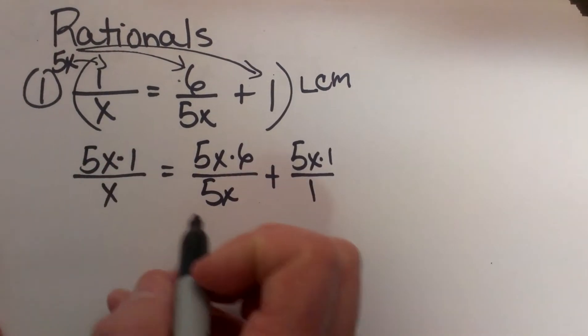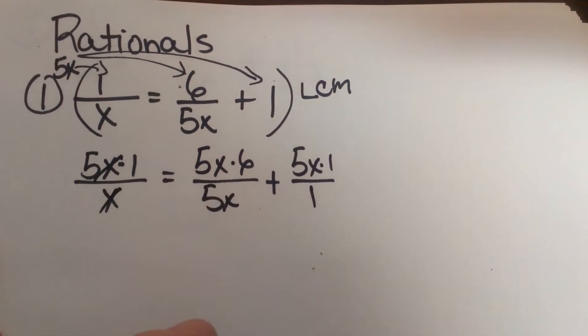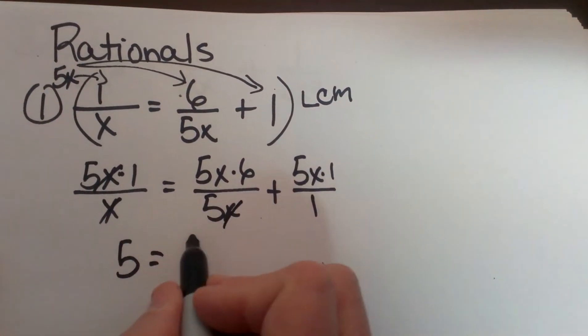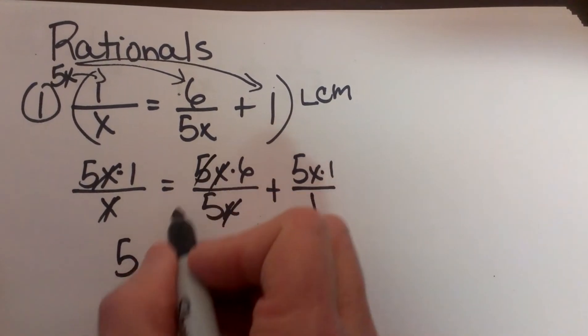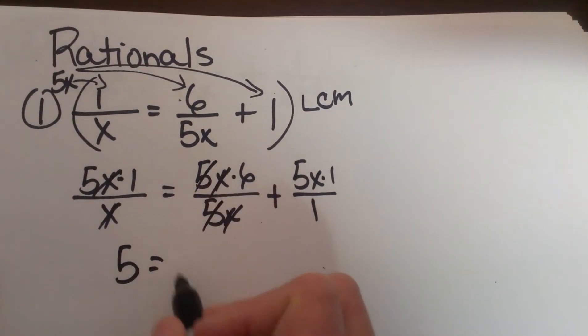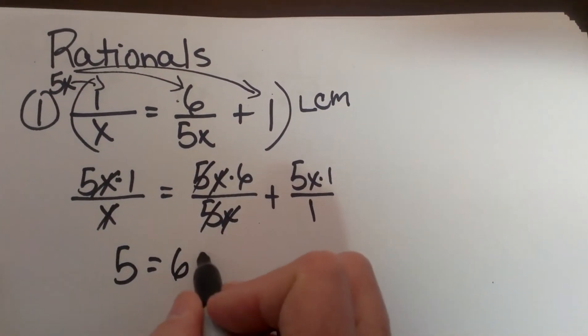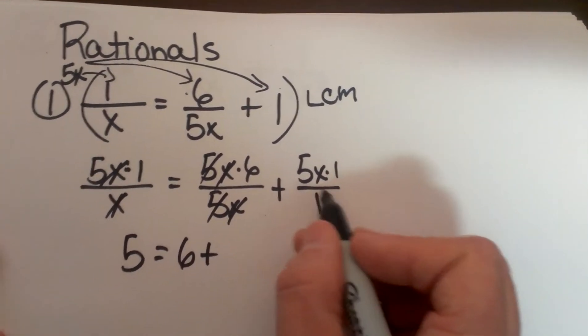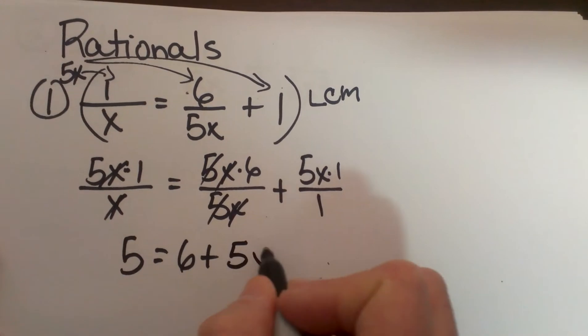Now look what I can do to simplify these. I can cancel those x's out and I am just left with 5. Over here I can cancel an x and I can cancel 5 so I am left with 6 plus if I take 5x times 1 all divided by 1 that is just going to give me 5x.